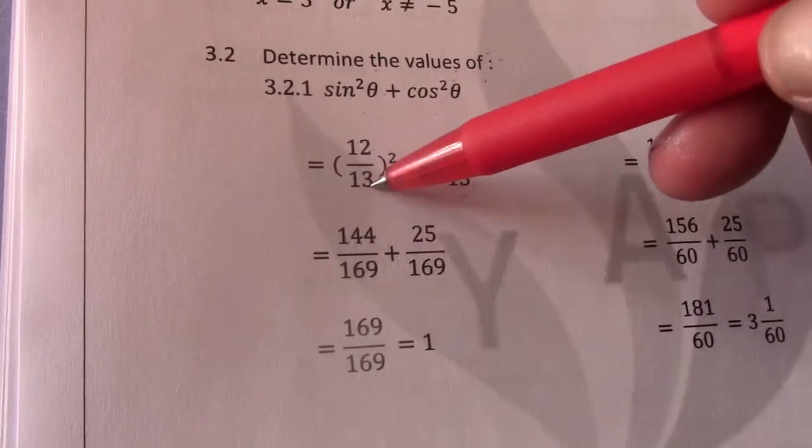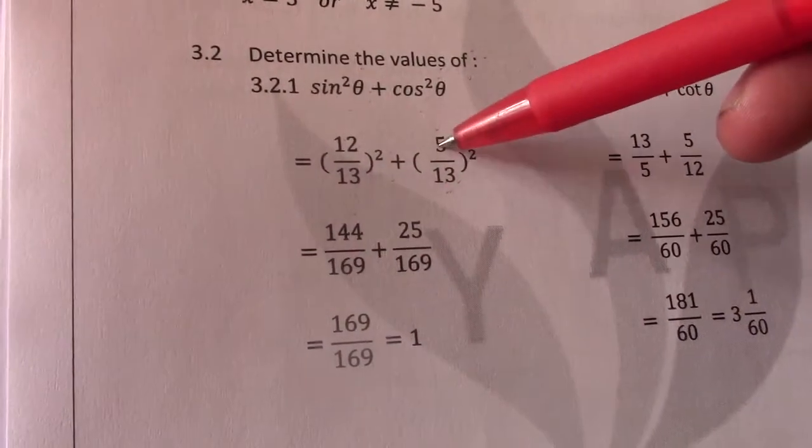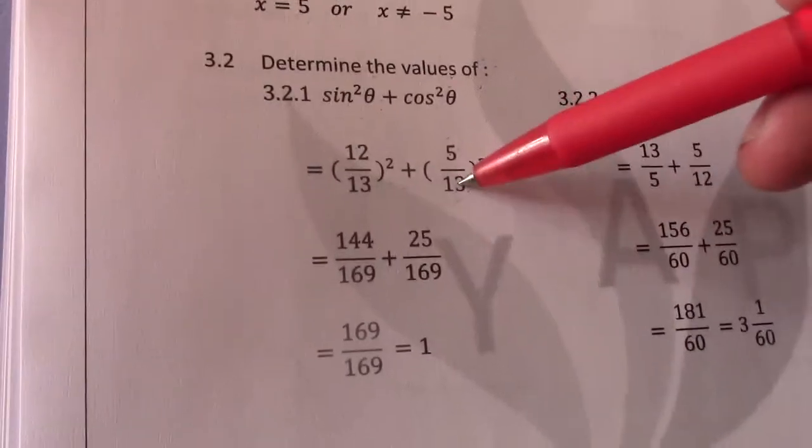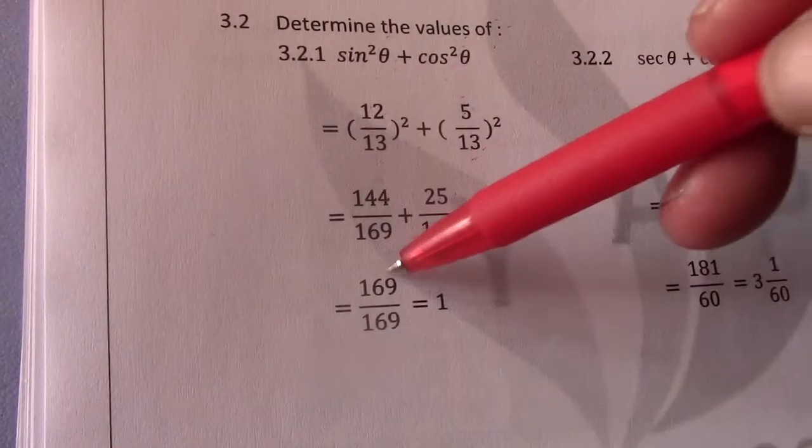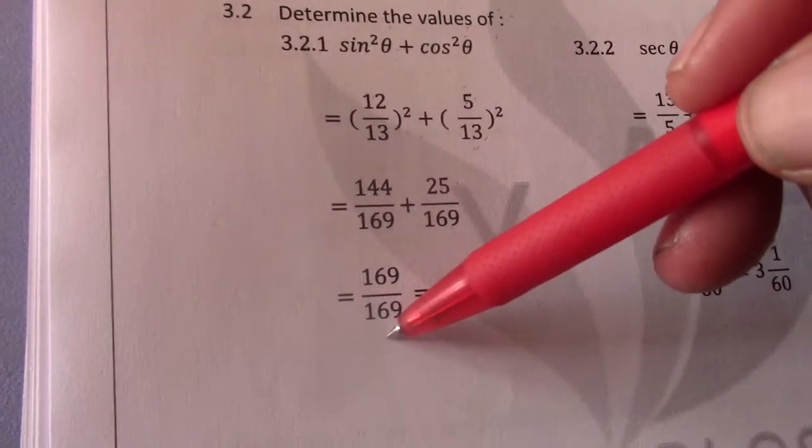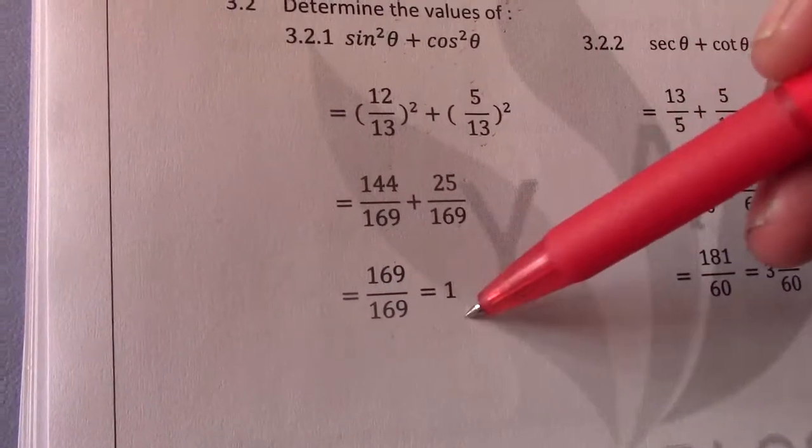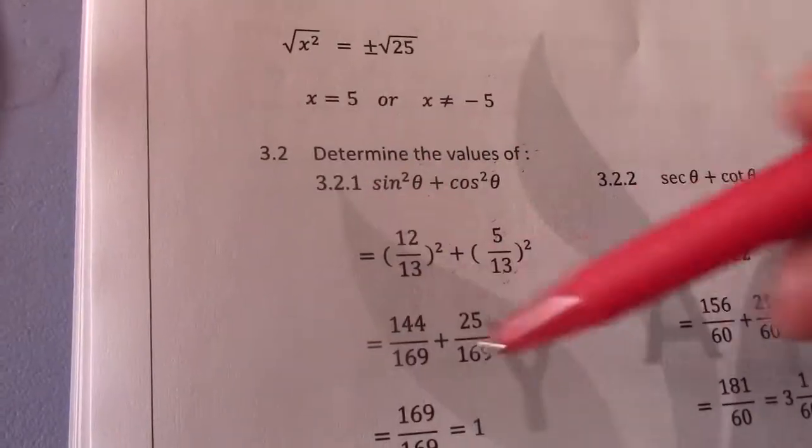So 12 squared is 144. 13 squared is 169. 5 squared is 25. 13 squared is 169. 144 plus 25 gives me 169. 169 divided by 169 equals 1. Right. So there I have determined the value of that plus Z.